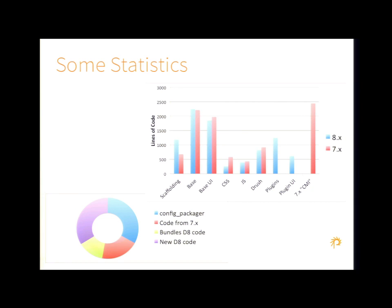Looking at the pie chart breakdown of where the code came from: in blue is the code from Nedjo's config packager — about a third of features came from that, though we had to rename everything from config packager to features. In red is code brought over from D7 without change — the Form API hasn't changed, so the user interface was mostly copy-pasted, though you do have to change some things like form state being an object now. In greenish color is brand new code for things like bundles. And purple is new code for core features packaging. Overall, the result was about the same number of lines of code — all the CMI stuff I took out, I put back with new functionality. The overall module ended up being about the same weight.